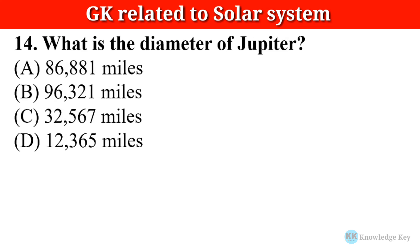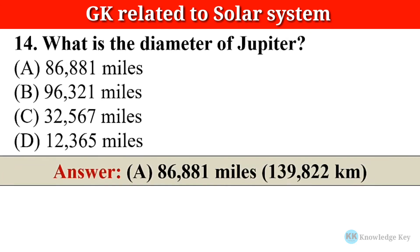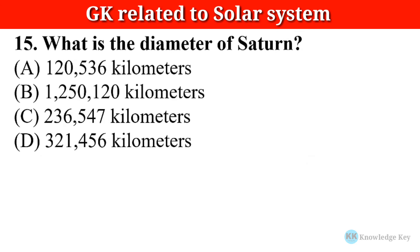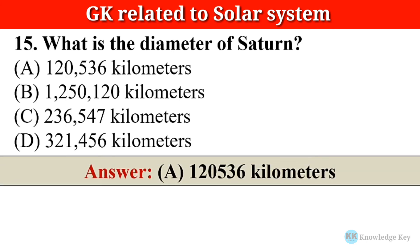Question number fourteen: What is the diameter of Jupiter? The correct answer is option A — 1,20,536 kilometers. Question number fifteen/sixteen: What is the diameter of Saturn? The correct answer is option A — 1,20,536 kilometers.